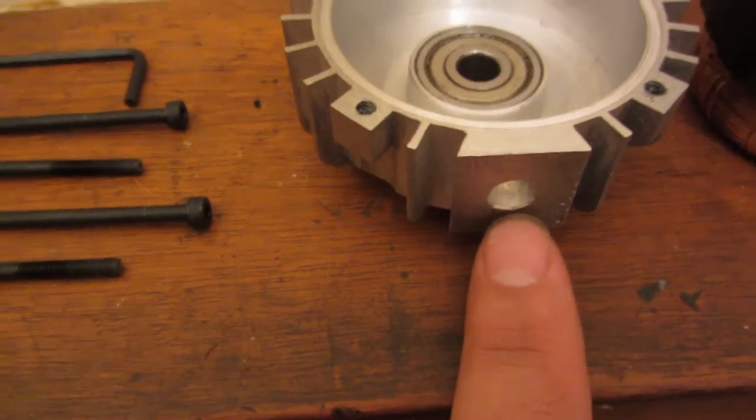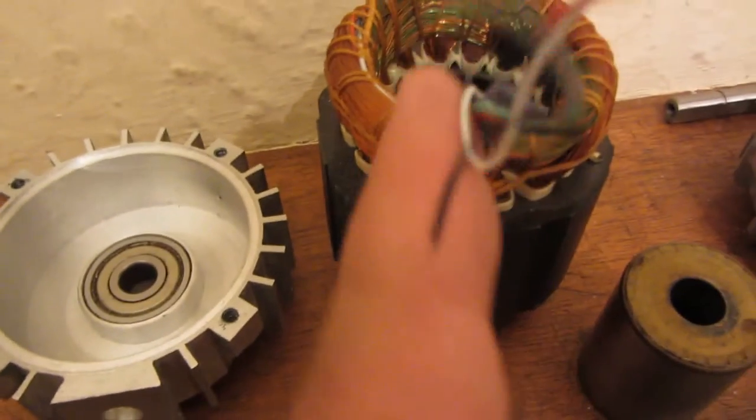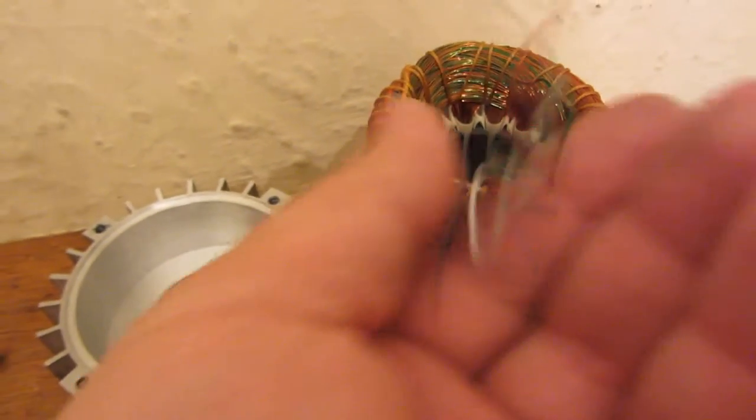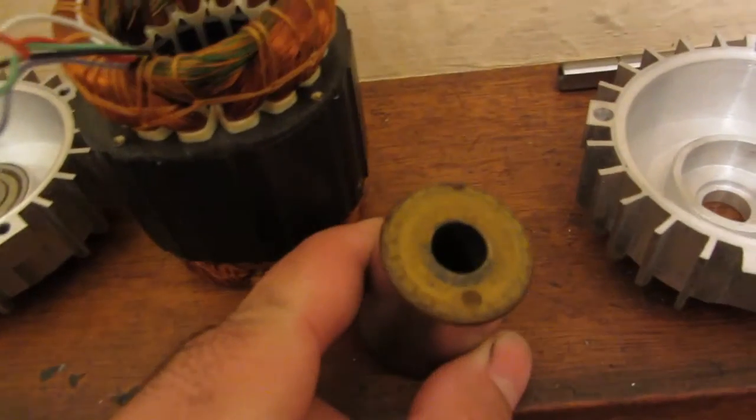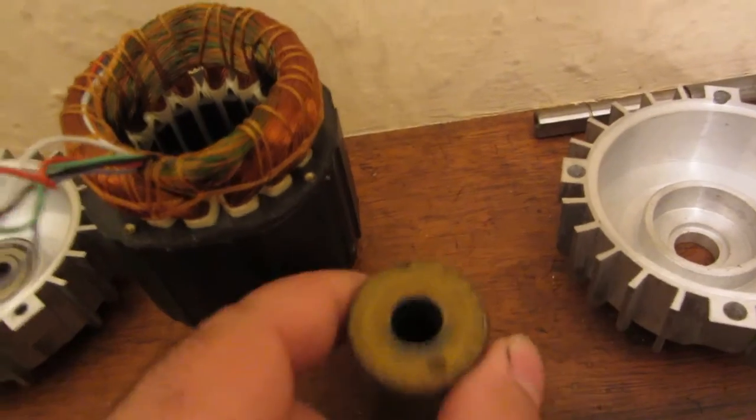Motor stator showing the wires for the multi-speed connections. We'll come to that in a second. Motor rotor, this is the part that spins around inside the stator as illustrated.